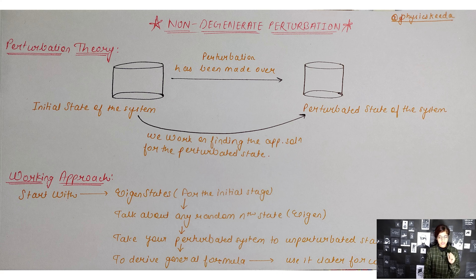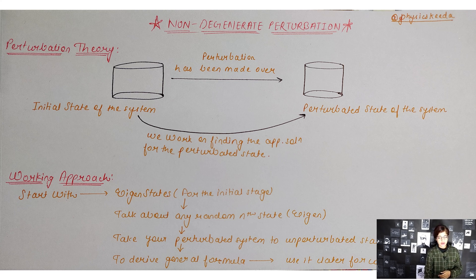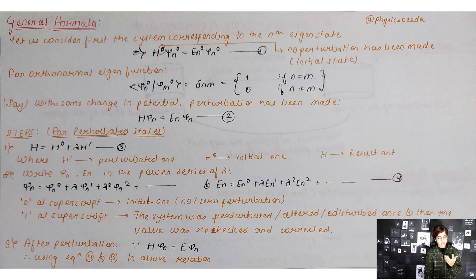Now it's time to get specific about the non-degenerate perturbation theory, in order to find where and at what state and at what corresponding energy your system will land after you disturb its state once or twice. Here, we are first going to derive a general formula and then use it to find the energy and state of a system after it has been perturbed once or twice.